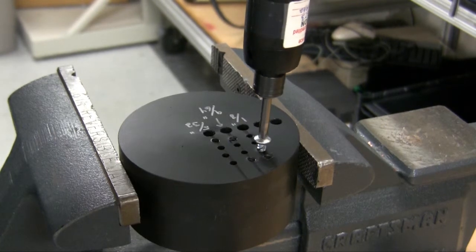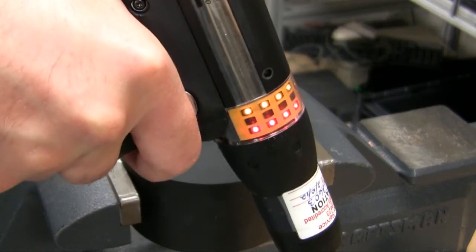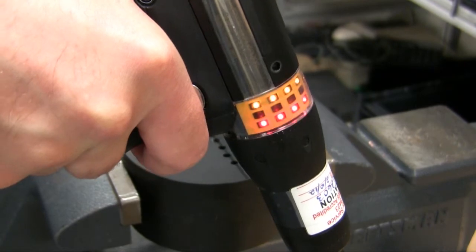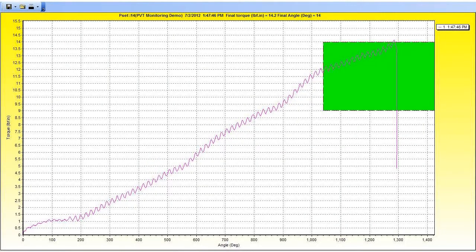Finally, running the screw into a smaller hole gives us prevailing torque above the PVT monitoring maximum limit, and we again receive a not-okay result.